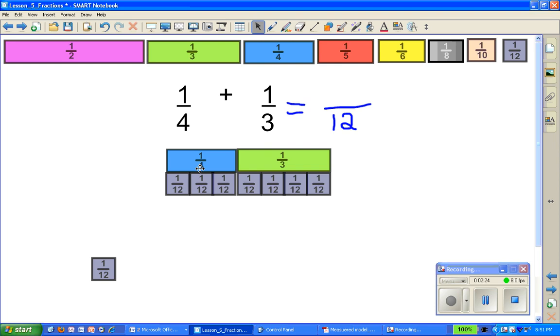So 1/4 plus 1/3 is the same as 3 twelfths and 4 more twelfths which is 7/12.